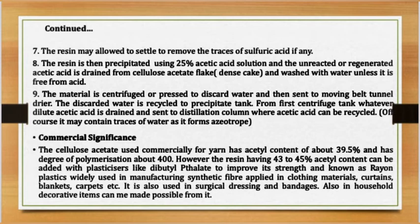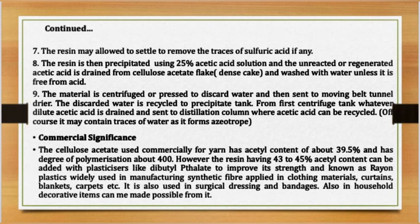Regarding commercial significance: cellulose acetate used commercially for yarn has an acetyl content of about 39.5% and a degree of polymerization of about 400. Resins with 43 to 45% acetyl content can be added with plasticizers like dibutyl phthalate to improve strength, and are known as rayons. This plastic is widely used in manufacturing synthetic fibers applied in clothing materials, curtains, blankets, carpets, etc. It is also used in surgical dressings and bandages, as well as household decorative items.